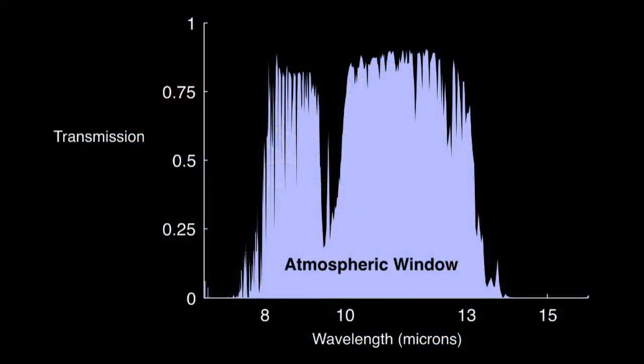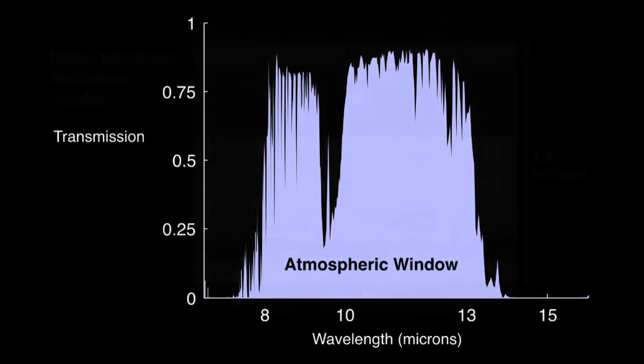But the atmosphere doesn't absorb all that heat. At certain wavelengths, in particular between 8 and 13 microns, our atmosphere has what's known as a transmission window. This window allows for some heat in a form of infrared light to effectively escape into outer space.